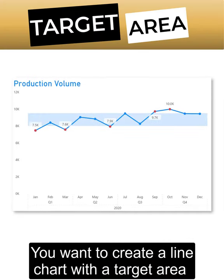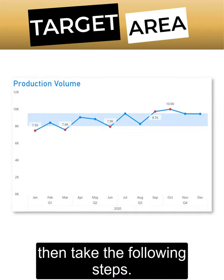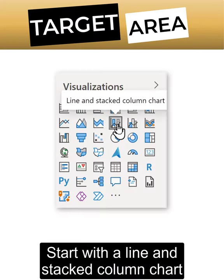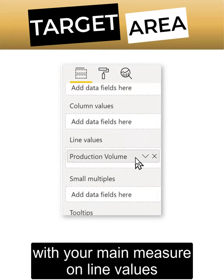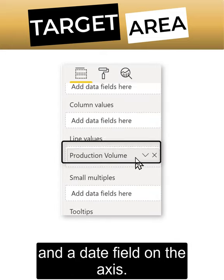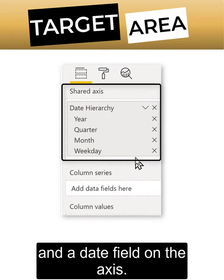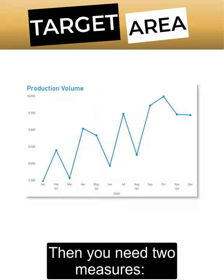To create a line chart with a target area, take the following steps. Start with a line and stacked column chart with your main measure on line values and a date field on the axis.